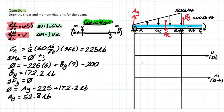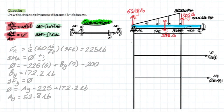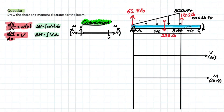Now let's plug all of this into our drawing and diagram so we can move on with the problem. The reaction at A creates a positive jump in our shear diagram, so we start at 52.8 at point A. Next, we divide our sections: section one covers the distributed load, and section two covers where the distributed load ends and leads into the external moment.